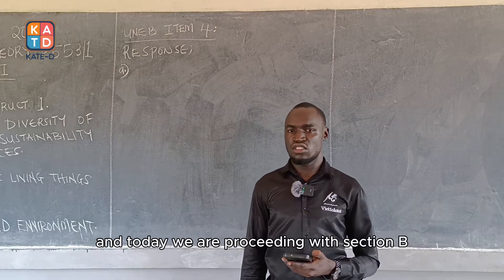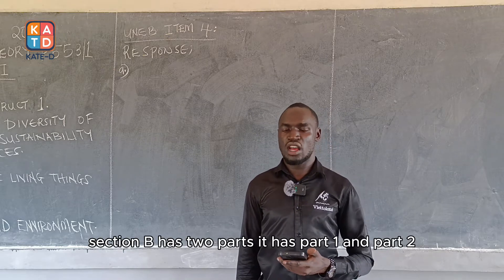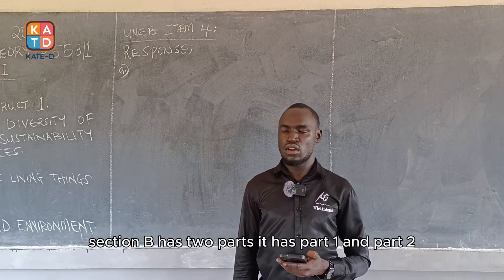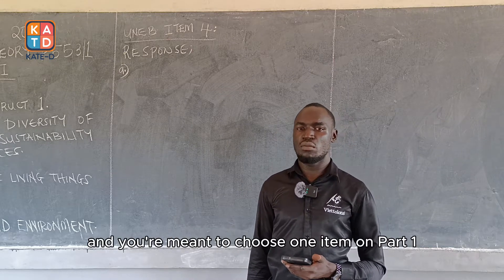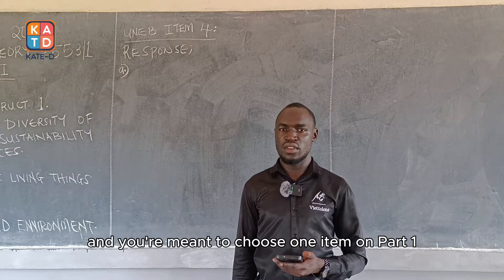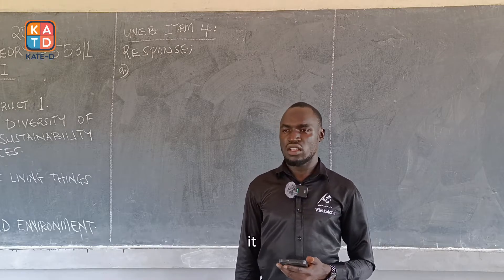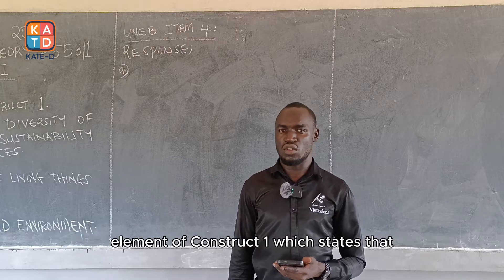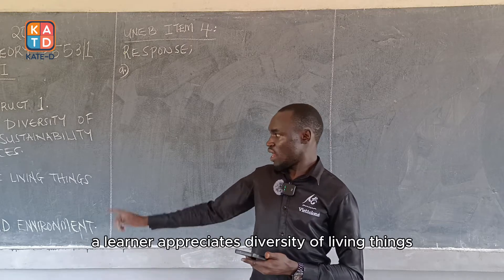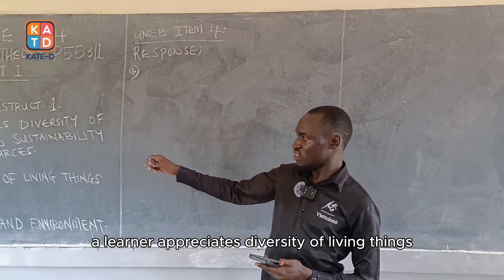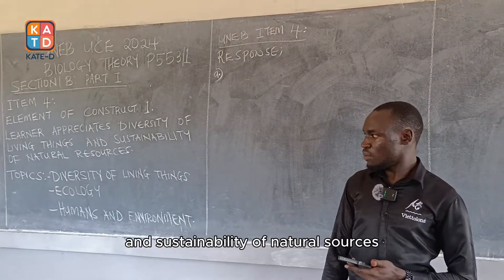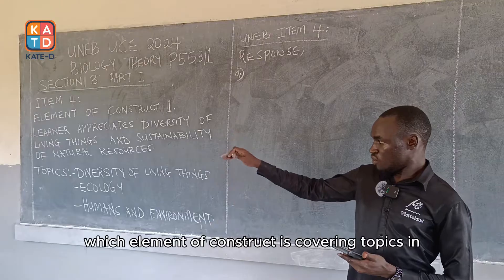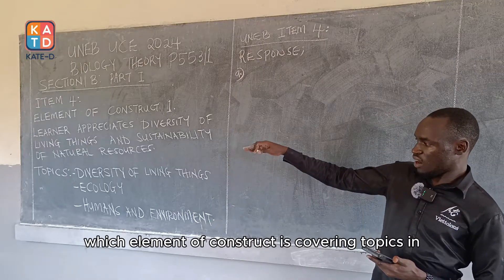Section B has two parts: part 1 and part 2. Part 1 has two items and you are meant to choose one item. All questions in part 1 come from the same element of construct — element of construct 1 — which states that a learner appreciates diversity of living things and sustainability of natural resources. This element covers topic C.